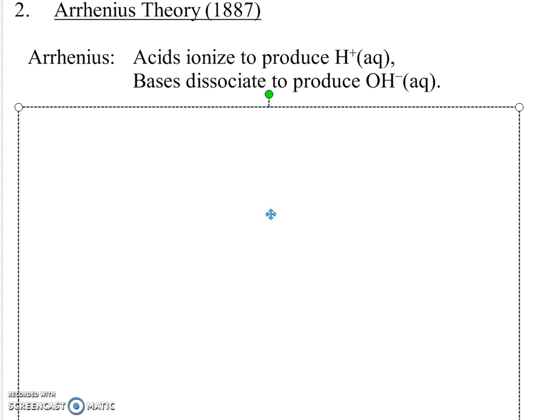And Arrhenius also said that bases probably produce hydroxide ion. So we're going to look at Arrhenius theory and realize that it's not quite good enough to explain some strange evidence. So I'm going to propose a new theory.